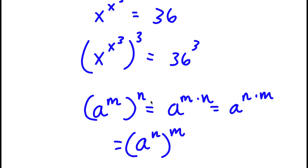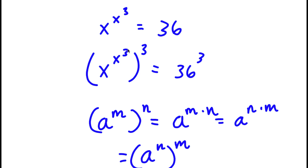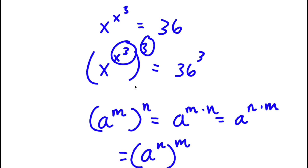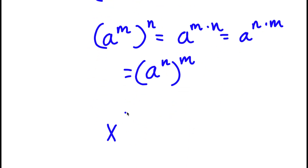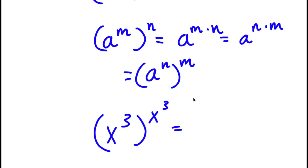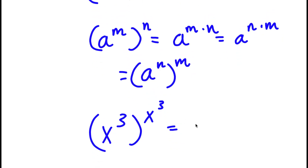In this case, I have x to the power of x to the power of 3, to the power of 3. We can think of x to the power of 3 as m and 3 as n. So if I switch these two places, I get x to the power of 3 to the power of x to the power of 3, is equal to 36 to the power of 3.